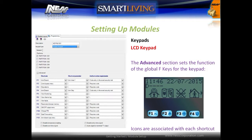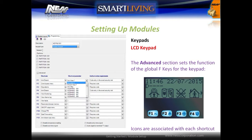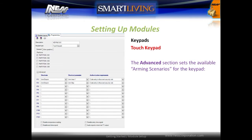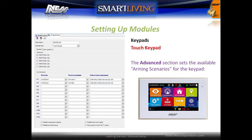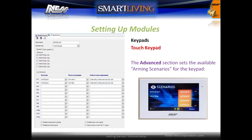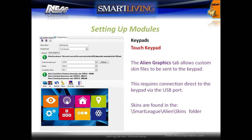The Advanced section for LCD keypads sets up the global function keys for the keypad. Each shortcut has an assigned icon which is set using the Shortcuts menu under the System Configuration tree. To configure a key, simply select the type of shortcut, then select the shortcut parameter, and set if a code is required to operate the function. The Advanced section for Touchscreen keypads sets the available arming scenarios for the keypad. Touchscreen keypads do not have function keys, so no other options are available. The Alien Graphics tab allows custom skin files to be sent to the keypad, which requires a direct connection via the keypad's USB port.